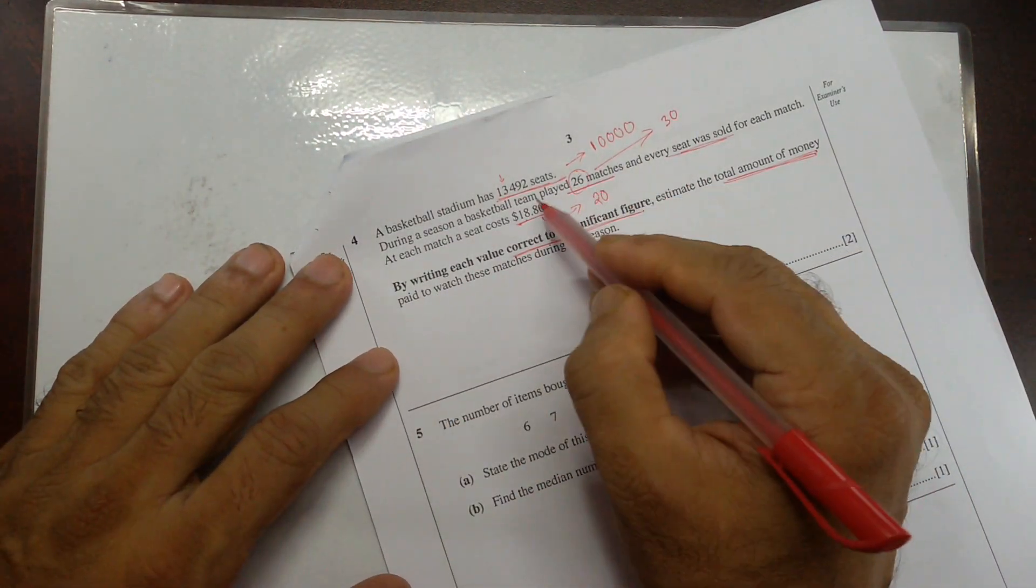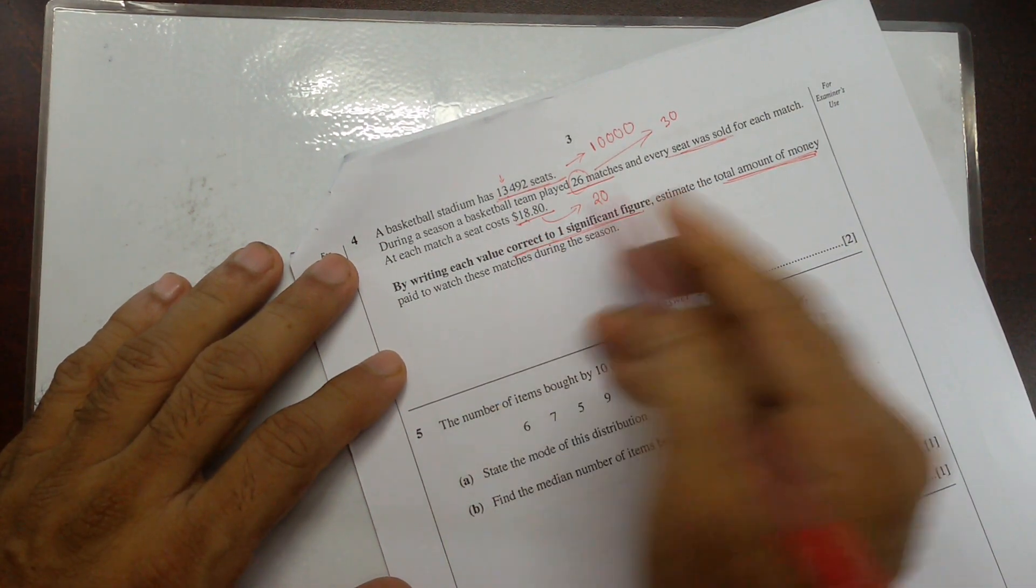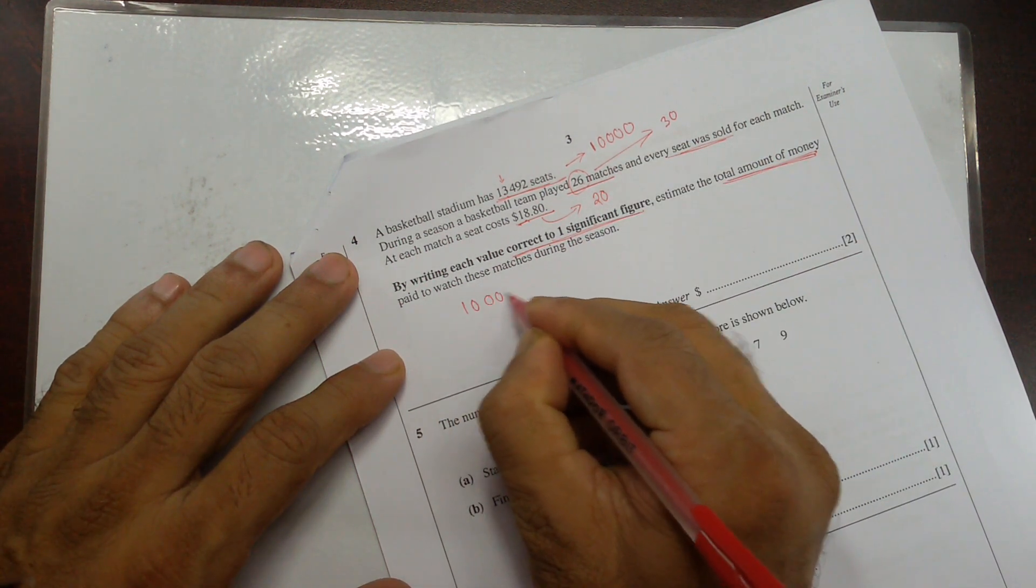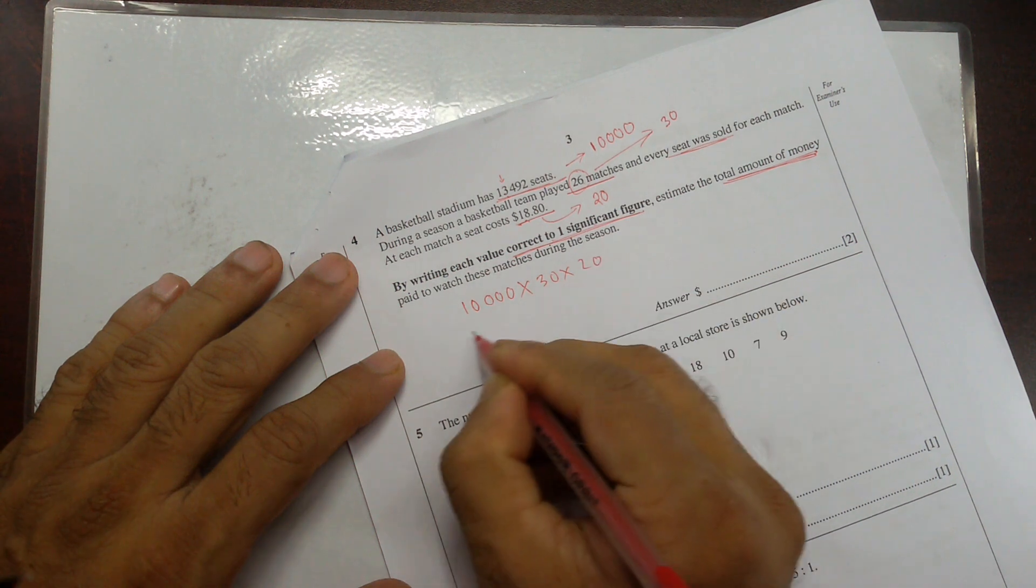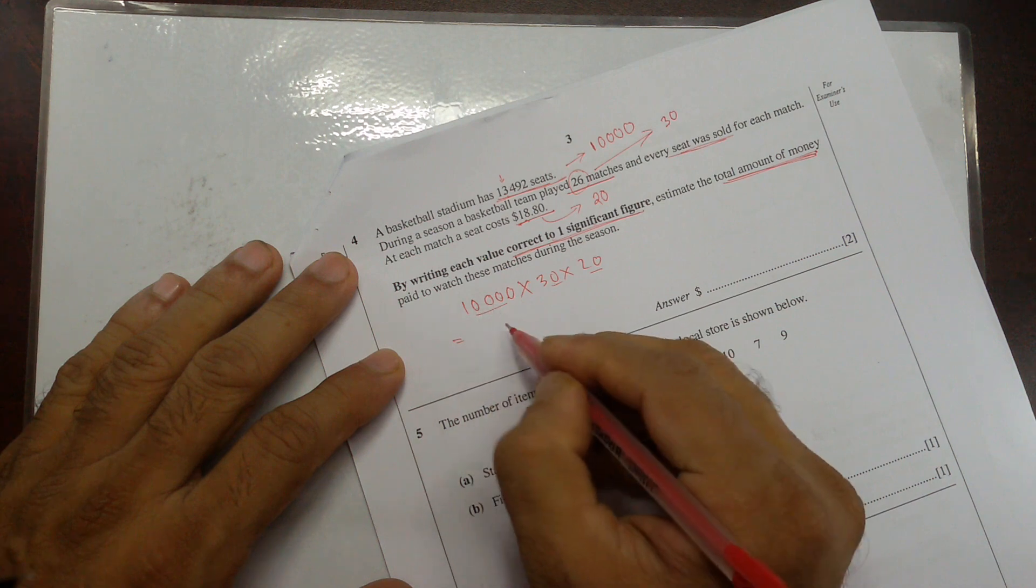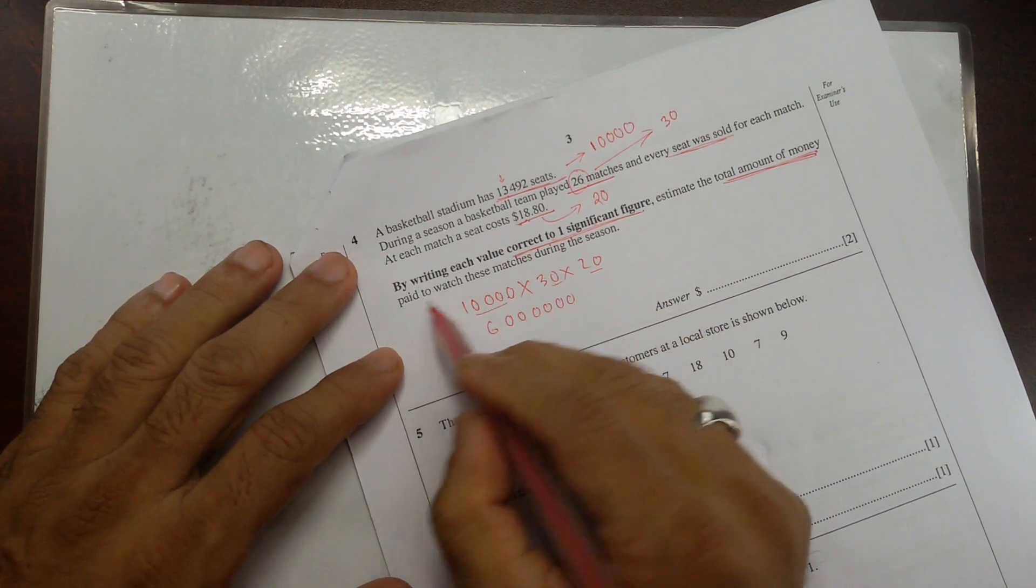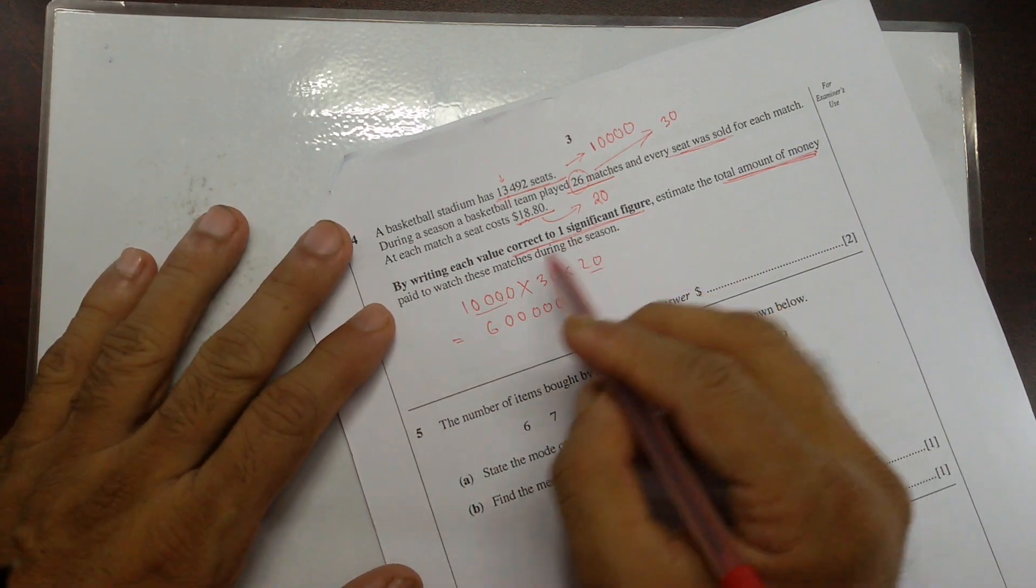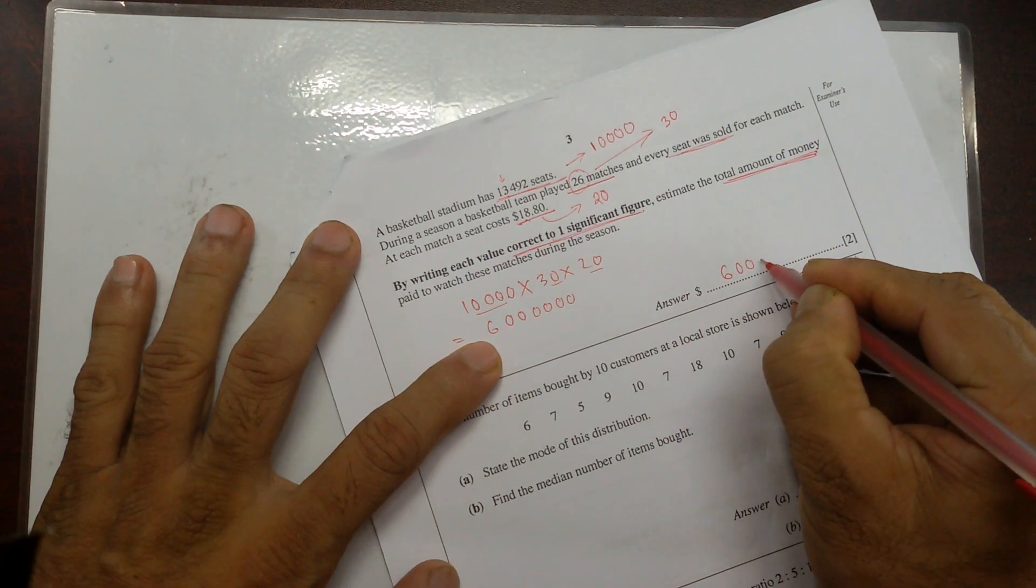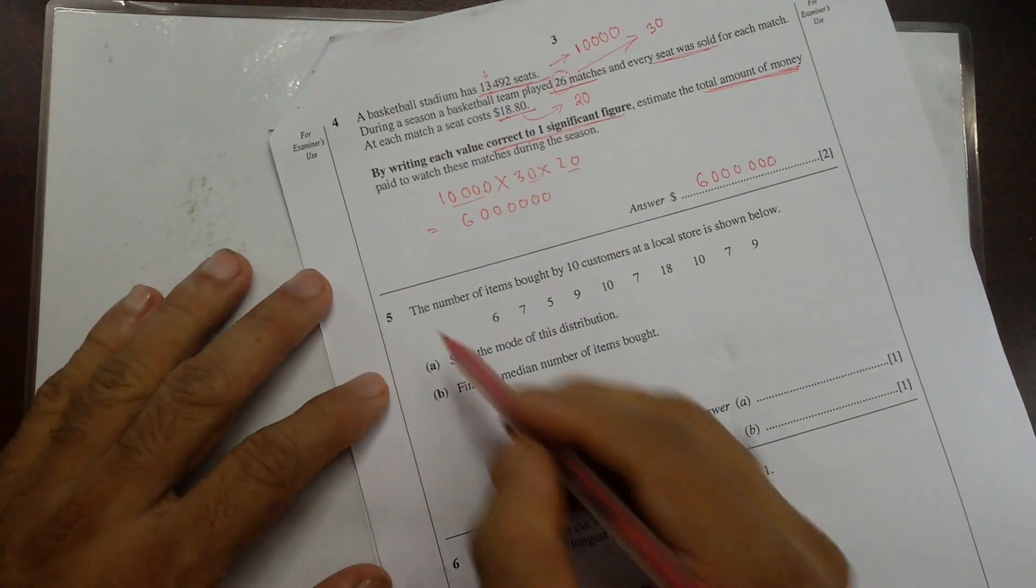Now I have to estimate the total amount. So that many seats in this game, and each of them is that much. So we're going to multiply all of them: 10,000 times 30 times 20. So these are all zeros at the end, and we are multiplying: 1, 2, 3, 4, 5, 6 zeros. 3, 2 is 6. Do I have to put it in standard form or not? No, I didn't say that. So 6 followed by 6 zeros, that means 6 million dollars.